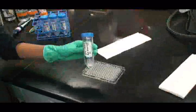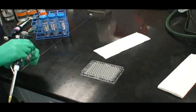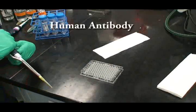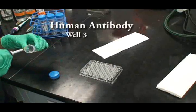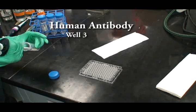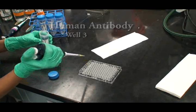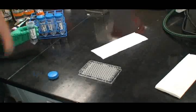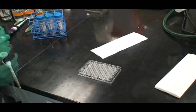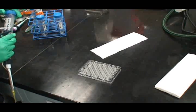Add 100 microliters of the diluted human antibodies to well 3 of each plate. Add 100 microliters of the diluted goat antibodies to well 5 of each plate.